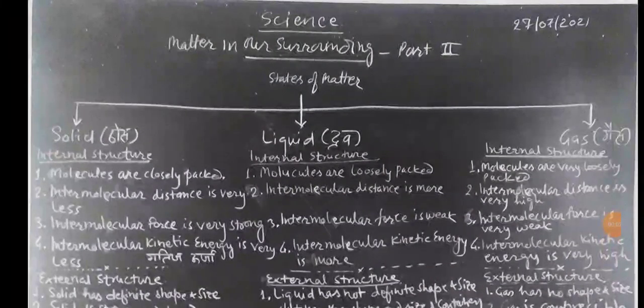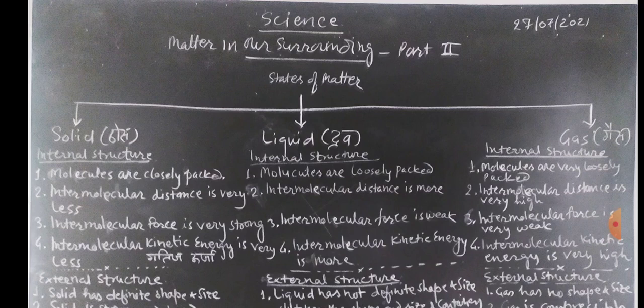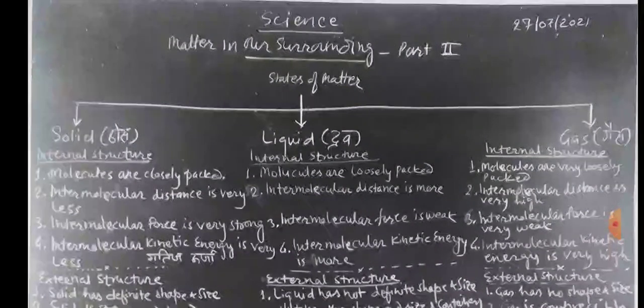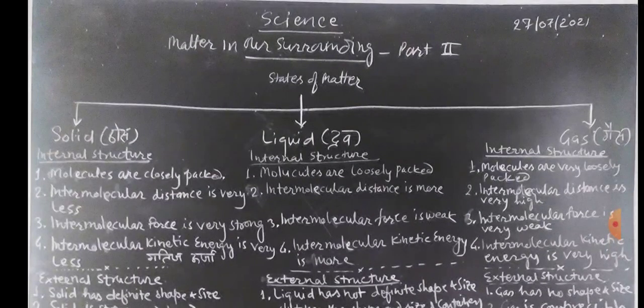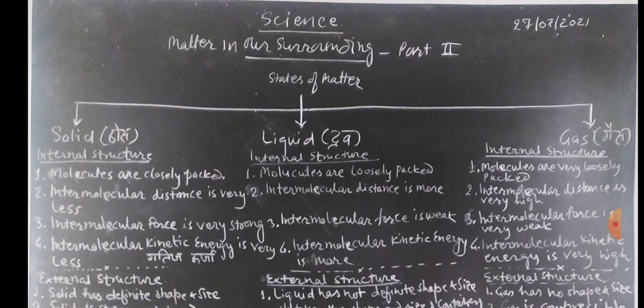Good morning, this is the class for science ninth class, first chapter: the matter in our surrounding, part two. We had discussed the states of matter. Now the details of the states of matter: there are four states of matter - solid, liquid, gas, and plasma.